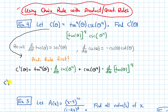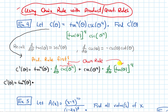So c prime of theta equals tangent to the fourth of theta times the derivative of cosecant of theta to the fourth. For that term, I have an outside function — the cosecant — and an inside function — theta to the fourth — so I'm going to need the chain rule. And for the tangent of theta to the fourth power, I also need chain rule because the fourth power is the outside function and tangent of theta is the inside function.